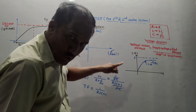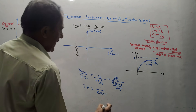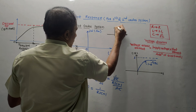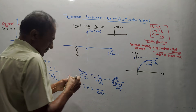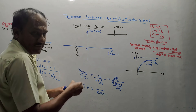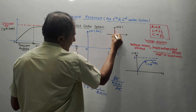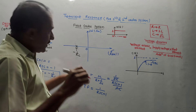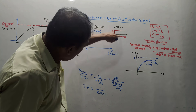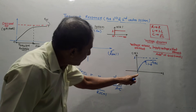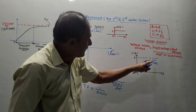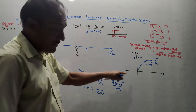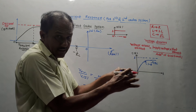We already learned this in the subject Signals as well as in this subject. With a unit step input — going from 0 to 1 — the output response rises from 0 to infinity to 1. This is called the transient response analysis of a first order system.